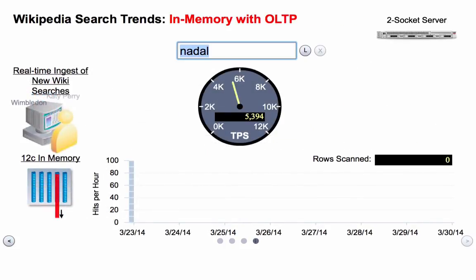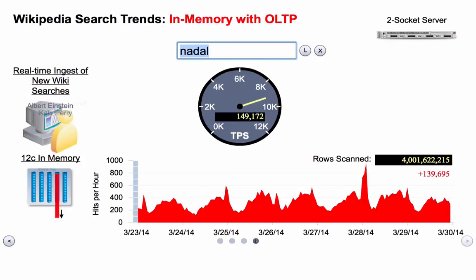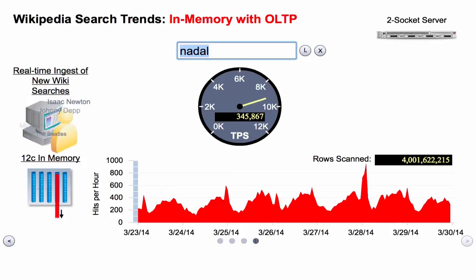Now let's move on to something a little more complicated. One of the things we say about our column store is that it works really well with OLTP, and this is a demonstration of that. We're running that same Wikipedia example, but now we're inserting data in parallel — running an OLTP application on the exact same table we're running these queries on. We're inserting Wikipedia data in real time. Wikipedia has about 8,000 to 10,000 searches per second, so it's a very busy website.